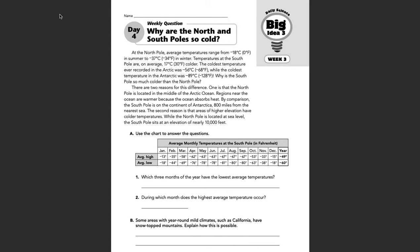Good morning guys, here we are, Science Bellwork Week 16, Day 4. Continuing that theme for the week: why are the North and South Poles so cold? Today we get into the average temperature range at the North Pole compared to the South Pole, and how those average monthly temperatures are similar and also the differences between the two locations. A couple paragraphs to read through — follow along as I read through the passage, then we'll move on to respond to Parts A and B.